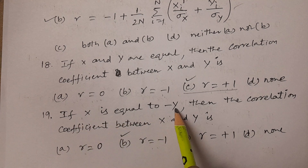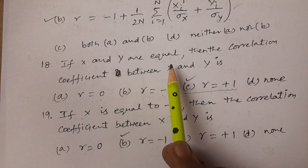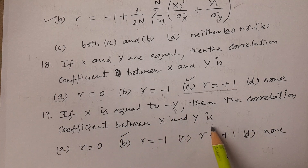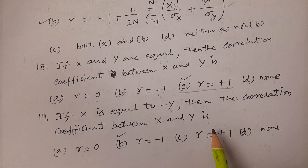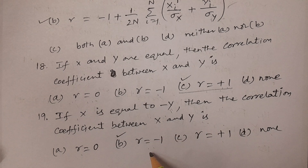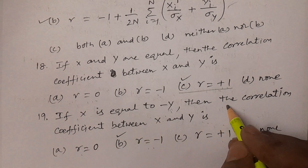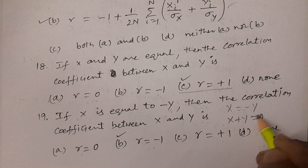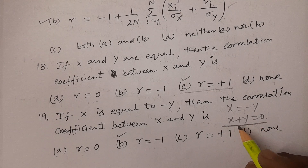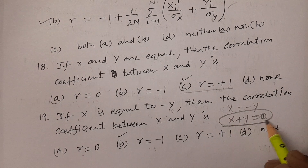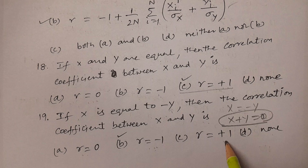To confirm: if x equals plus y, then x and y are equal and r equals plus one. If x equals minus y, then r equals minus one. The answer is option B, r equals minus one.